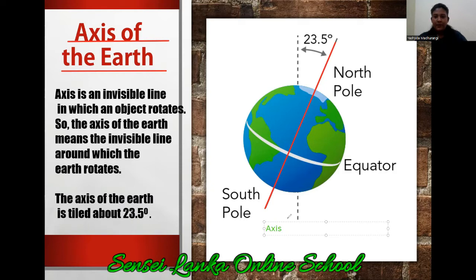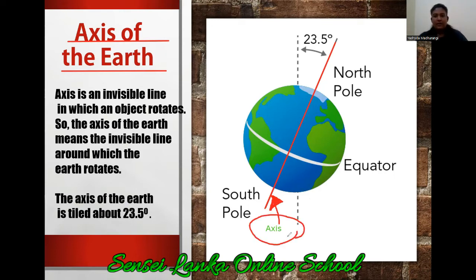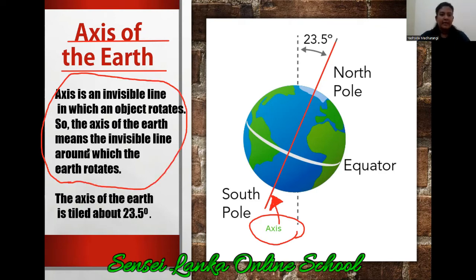What is the name of this line? This imaginary line — it is not real. This imaginary line goes across the planet earth. We call it axis. Then you have to understand this definition: axis is an invisible line in which an object rotates. So the axis of the earth means the invisible line around which the earth rotates.